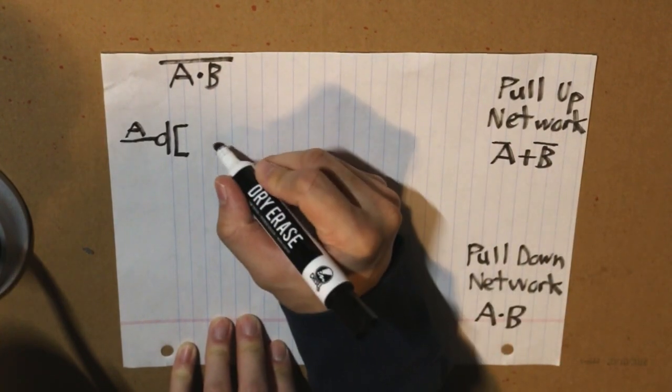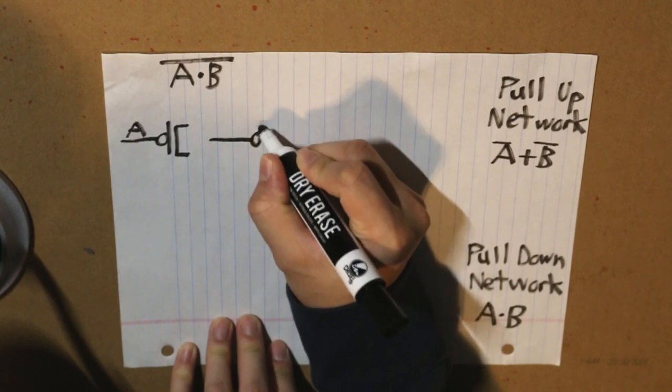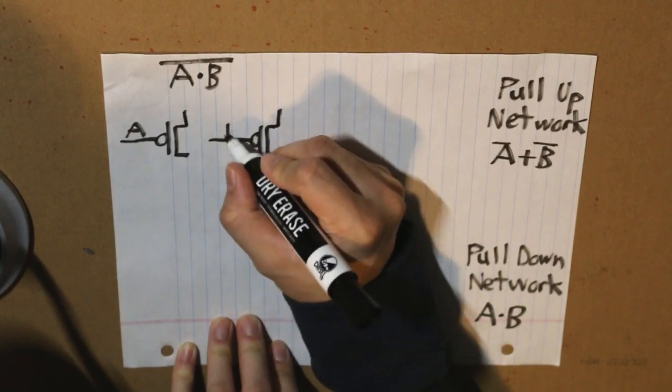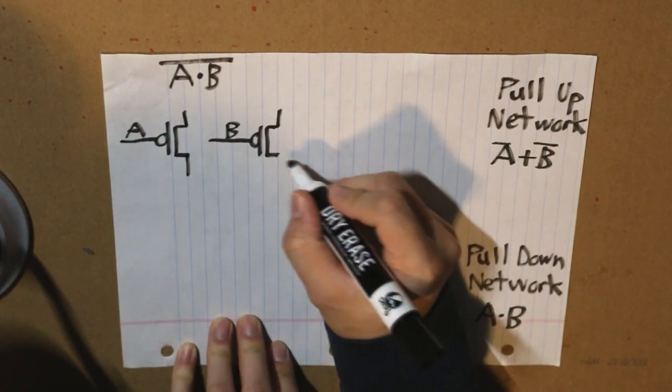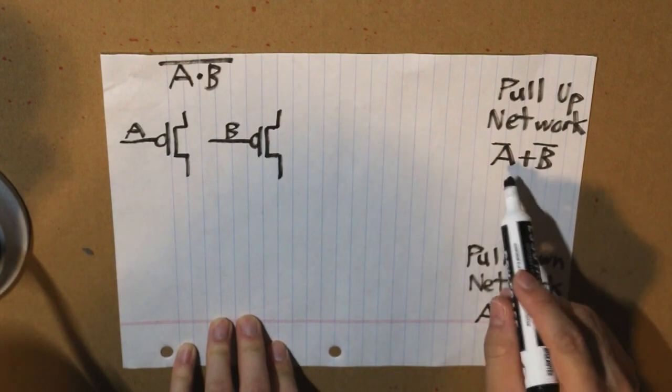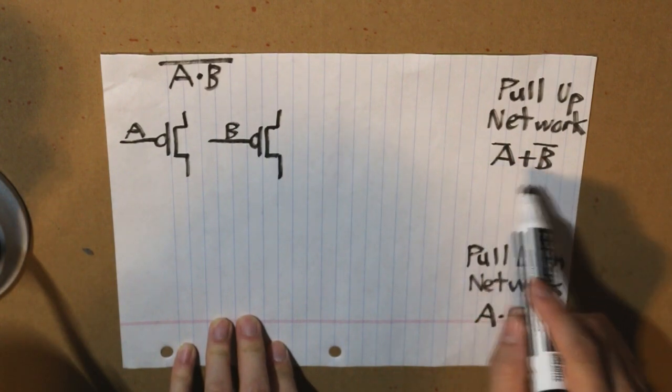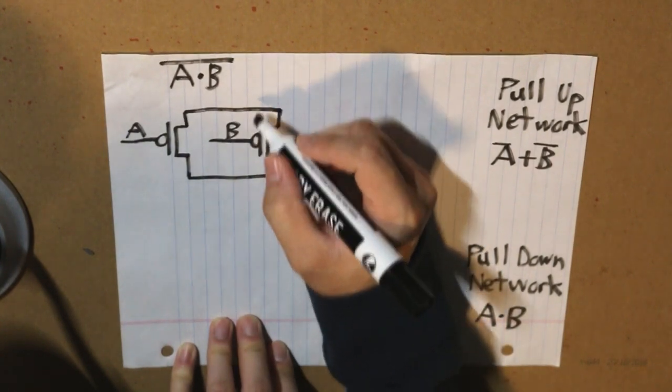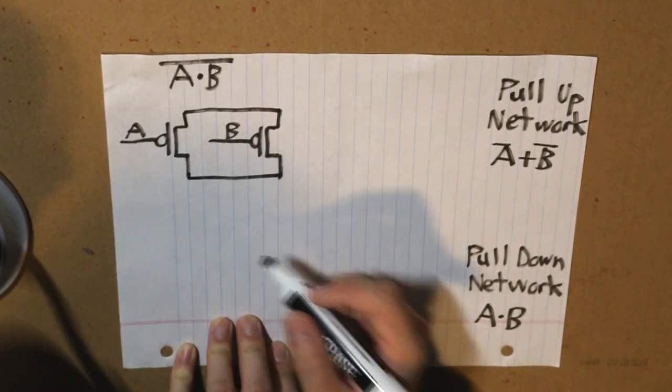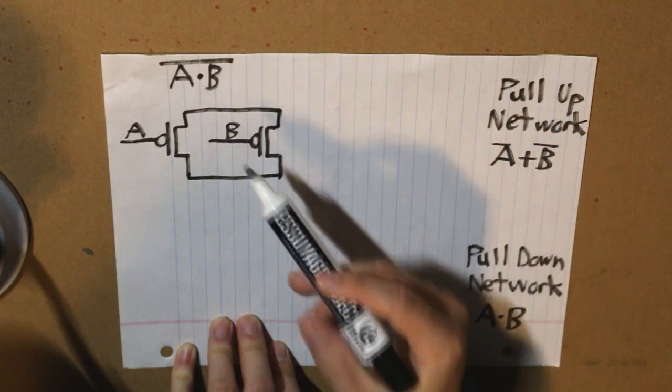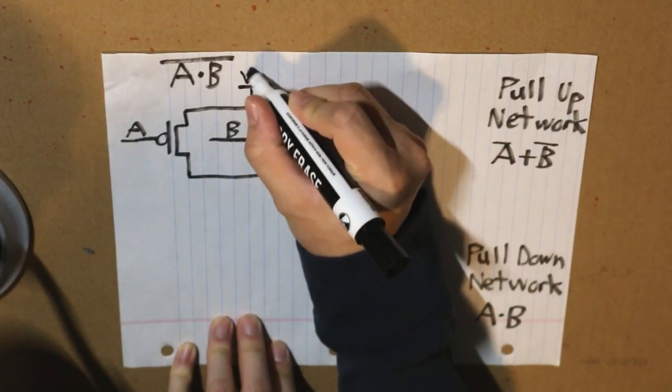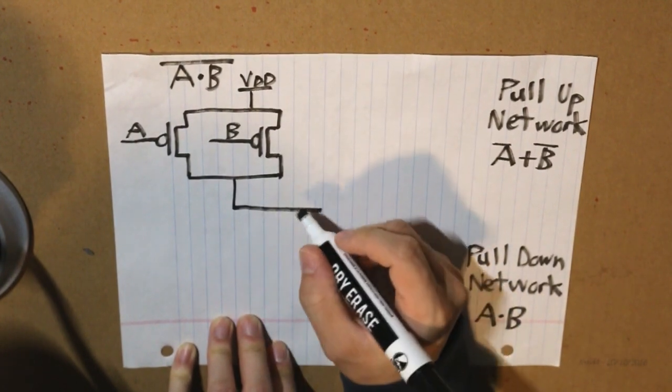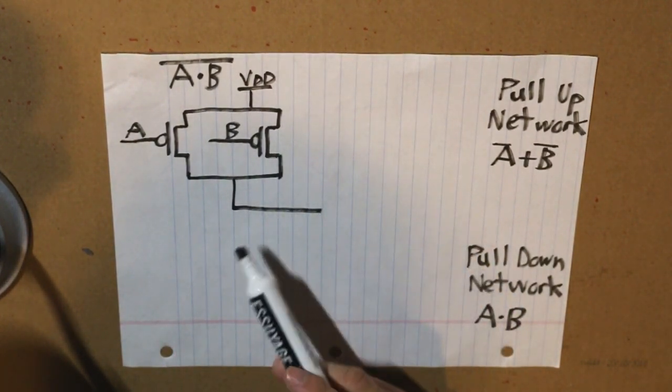B inverse, and we have both of them in an OR state. This is what it looks like. Our top is connected to an output, and here is our pull-up network for our NAND gate.